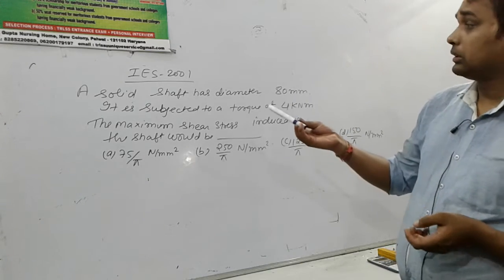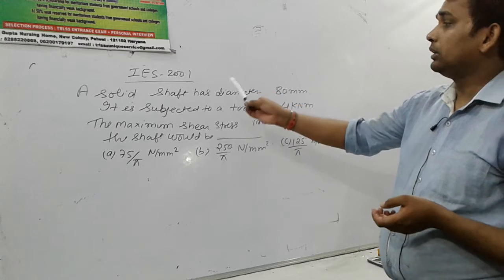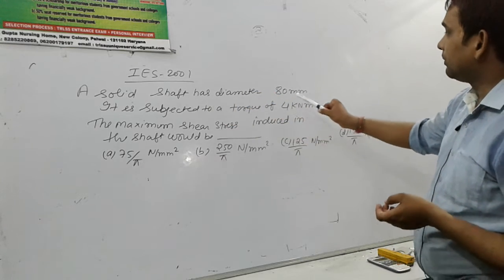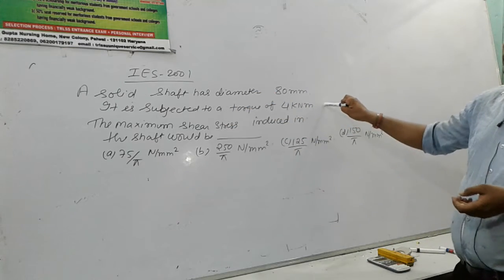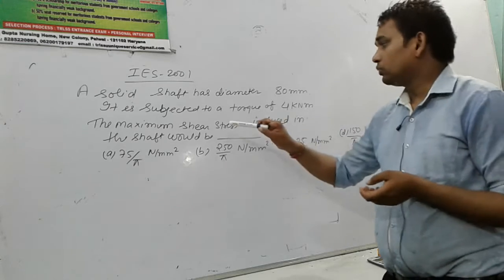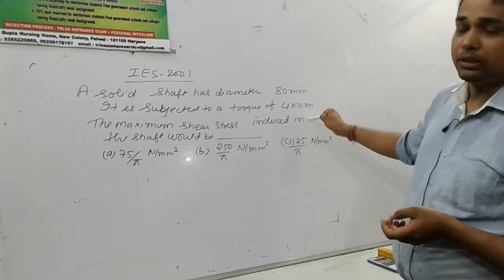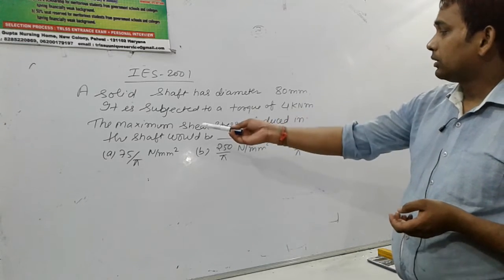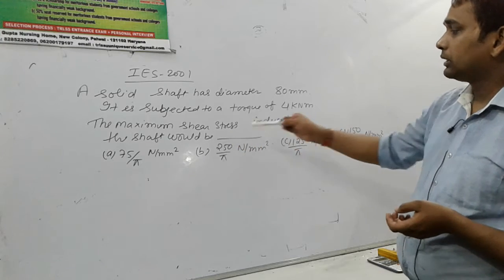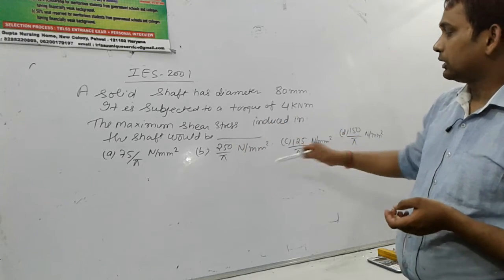Now we solve the question, IES 2001. A solid circular shaft has diameter 80 mm. It is subjected to a torque of 4 kilonewton meter. The maximum shear stress induced in the shaft would be. These are the options.